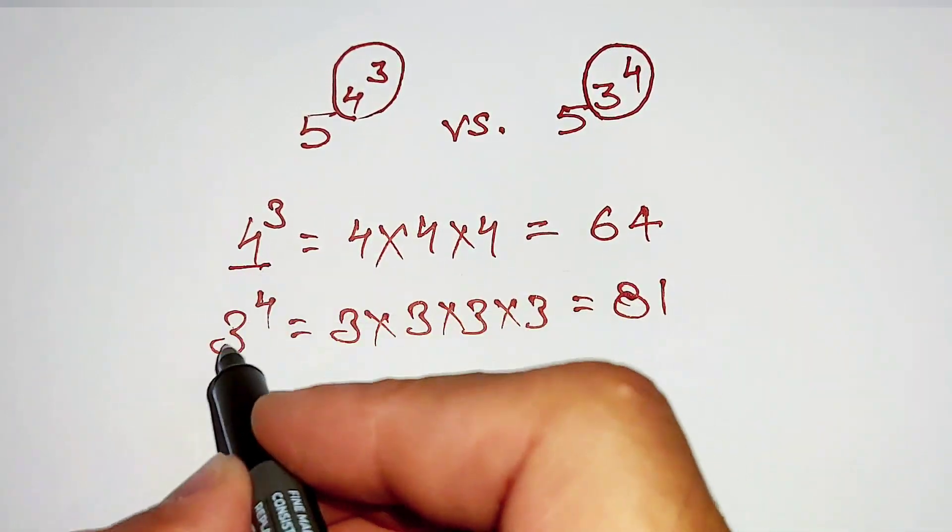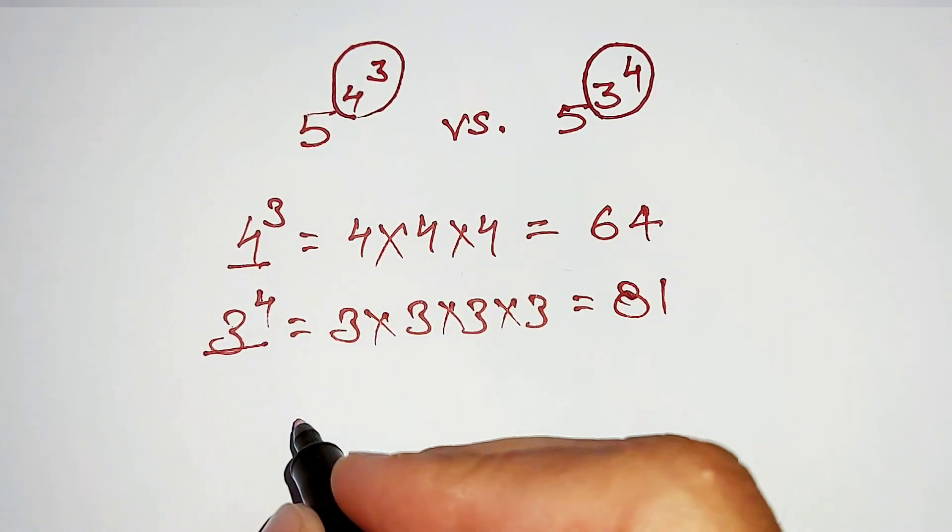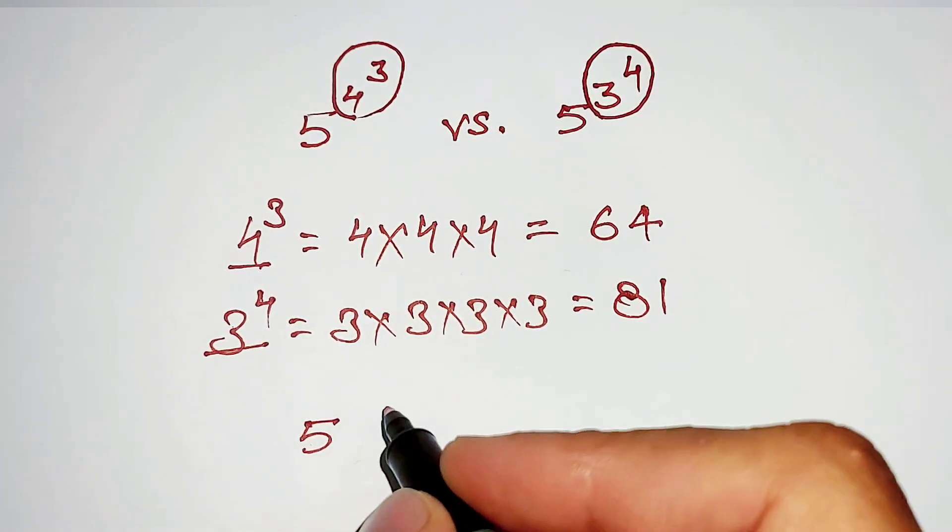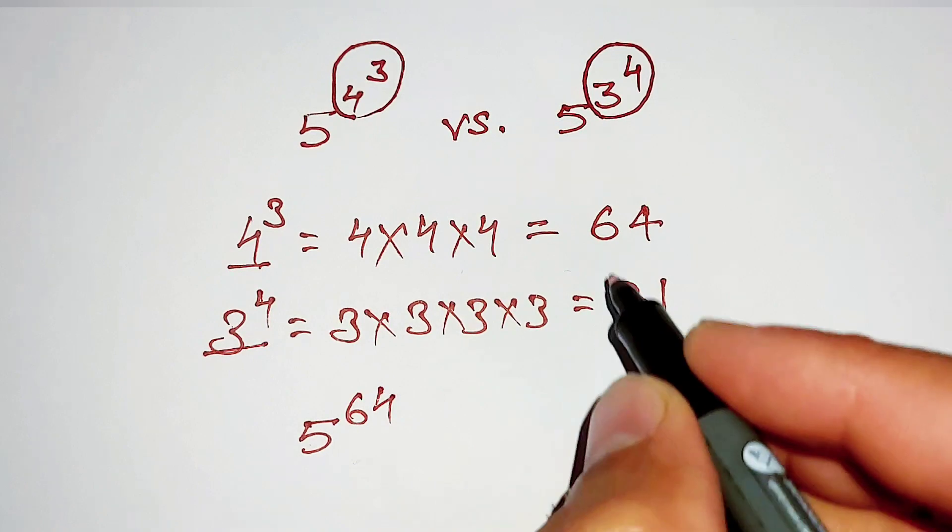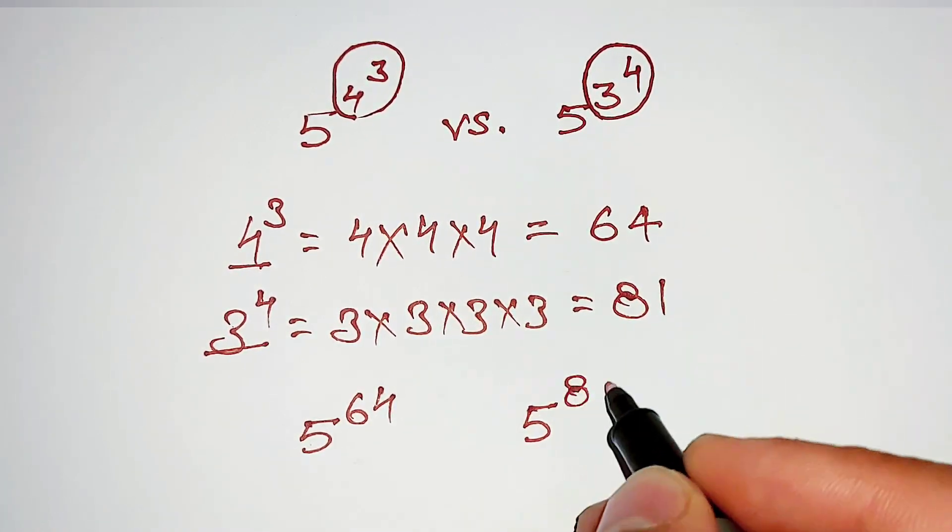Putting this value in this expression, what we get? 5 power 64, here 5 power 81.